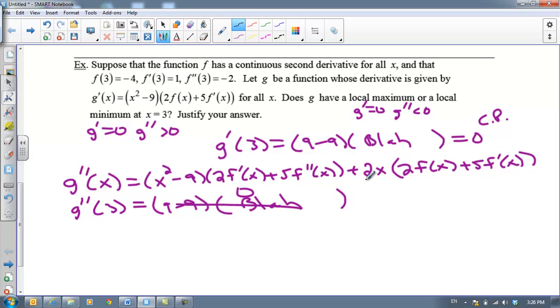The second part, however, will not be zero. So I'm going to plug in three for X. I get two times three times two times F of three plus five times F prime of three. Two times three is six. And then F of three is given to me in the table as negative four, times two is negative eight. F prime of three is given to me as one. I add those together and multiply by six. And I get negative 18.